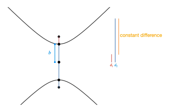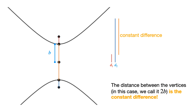Here's another bigger drawing that shows this basic difference. B in this case, because it's a vertical hyperbola, is the distance from the center to the vertex, and the constant difference is therefore going to be 2b in this case.